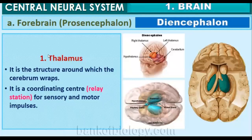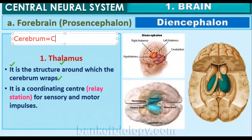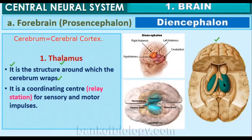The next part of the brain is the diencephalon. The first part of the diencephalon is the thalamus — it is the structure around which the cerebrum wraps. The thalamus is situated between the cerebrum and the cerebral cortex, with a larger thalamus portion and a smaller hypothalamus portion. The thalamus is a coordinating center for sensory and motor impulses.